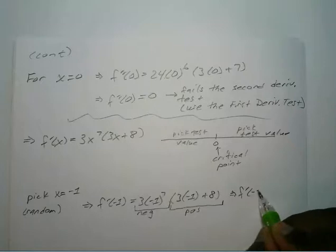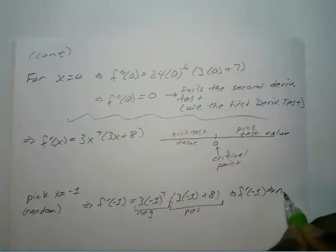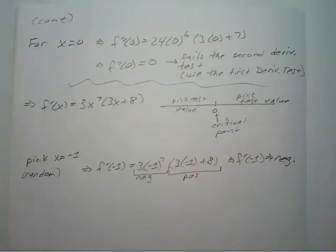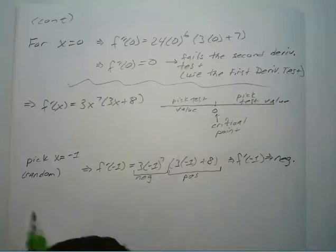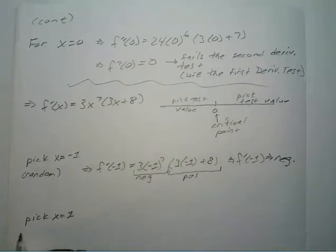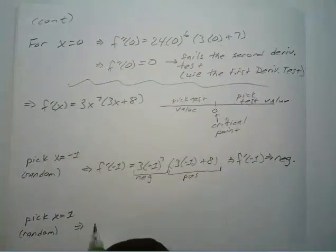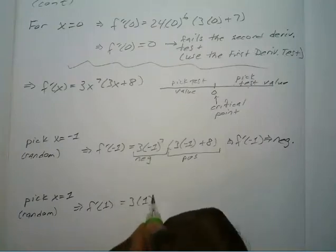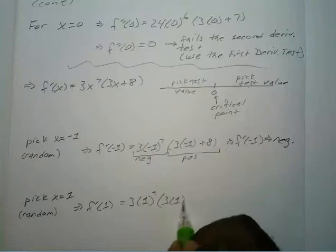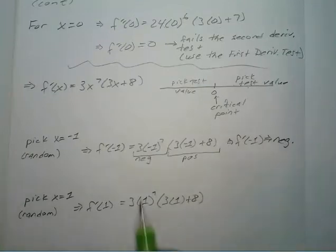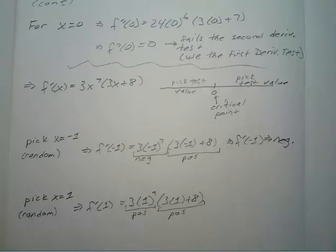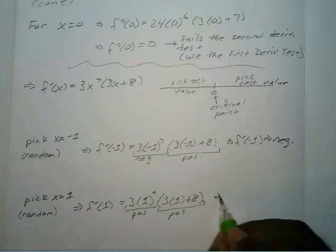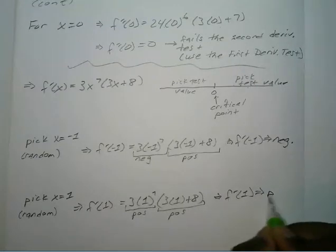So we know that f prime at negative 1 is going to be negative. For the right side, we pick x equals 1. F prime at positive 1 equals 3 times 1 to the 7th power times 3 times 1 plus 8. Two positive numbers multiplied is positive, and 3 plus 8 is positive. So f prime at 1 is going to be positive.